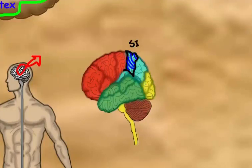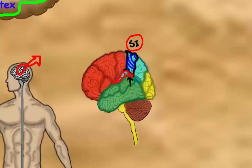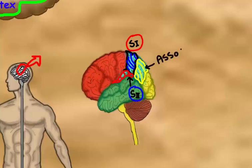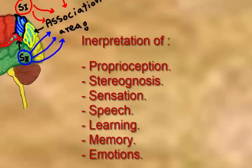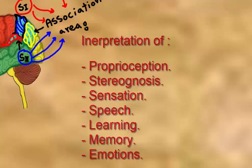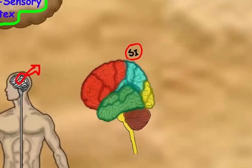S1 is the area that receives all types of sensations for every part of the body, except for some sensations received by other parts of the cerebral cortex. Along the lateral sulcus, we find S2 or the secondary sensory area, which has projections for specific parts of the body. The remaining area of the parietal lobe is called the sensory association area — it receives fibers from S1 and S2, and is an area of interpretation where proprioception, stereognosis, and higher functions are perceived.